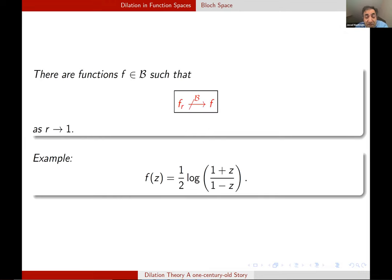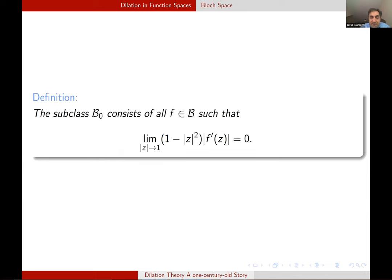Again, this space is big. This is our third example of a huge space. F_R doesn't go to F, here an explicit example. We will see why it doesn't satisfy the property we want. And again, our solution is to go to a smaller space.